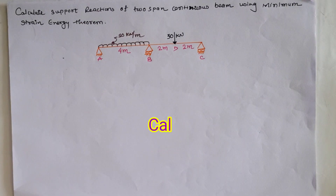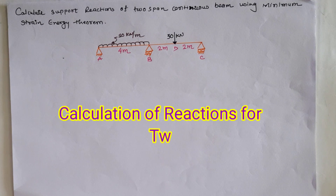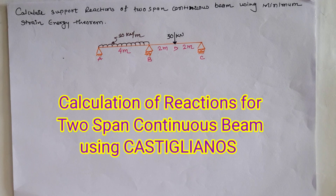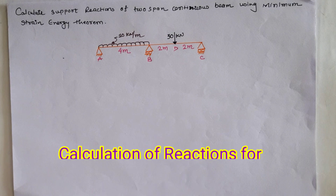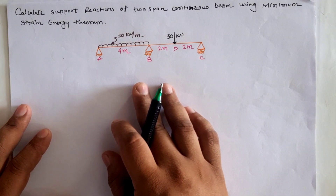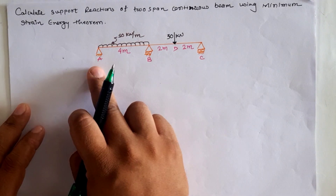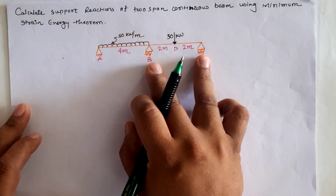Hello friends, today we are going to calculate the support reaction of a given two-span continuous beam using the minimum strain energy theorem, also known as Castigliano's second theorem for indeterminate structures. Observing the given two-span continuous beam, we have at support A a hinge, and at supports B and C, a roller.